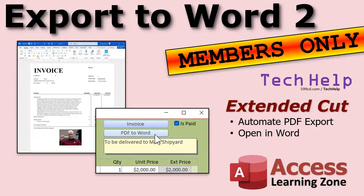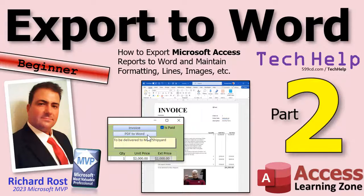Speaking of automating the process — in the extended cut I'll walk members through automating these steps. We'll automate the exporting of the PDF file, then open Word in the background, load up the PDF file, and then you can go right to town with one click. That's covered in the extended cut for members. Silver members and up get access to all of my extended cut videos, and gold members can download my databases built in these tech help videos. That's going to be your tech help video for today — I hope you learned something!